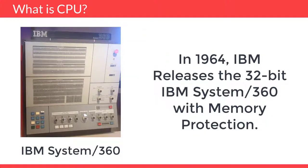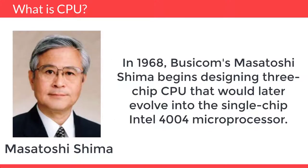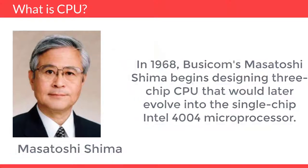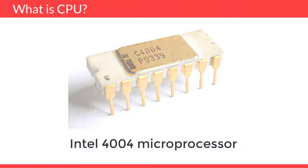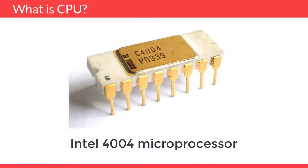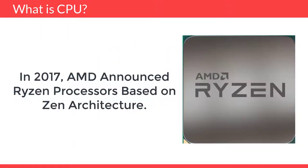In 1964, IBM released the 32-bit IBM System 360 with memory protection. In 1968, Busicom's Masatoshi Shima began designing a three-chip CPU that would later evolve into the single-chip Intel 4004 microprocessor. In 2017, AMD announced Ryzen processors based on the Zen architecture.